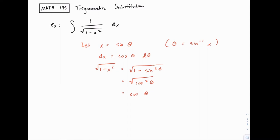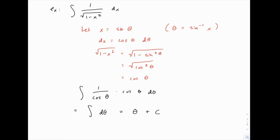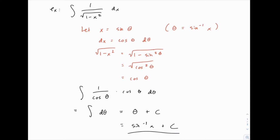Our integral gets much simpler: 1 over the square root of 1 minus x squared becomes 1 over cosine of theta, and dx becomes cosine of theta dθ — the cosines cancel and we just have the integral of dθ, which is theta plus C. Back-substituting, theta equals sine inverse of x, so our answer is sine inverse of x plus C. This matches the Calc 1 result that the derivative of arcsin(x) is 1 over the square root of 1 minus x squared.